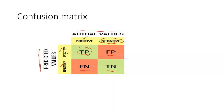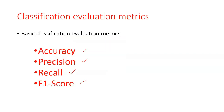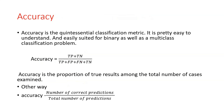This confusion matrix helps us evaluate the classification model. Basically, there are four classification evaluation metrics covered in this video: accuracy, precision, recall, and F1 score.